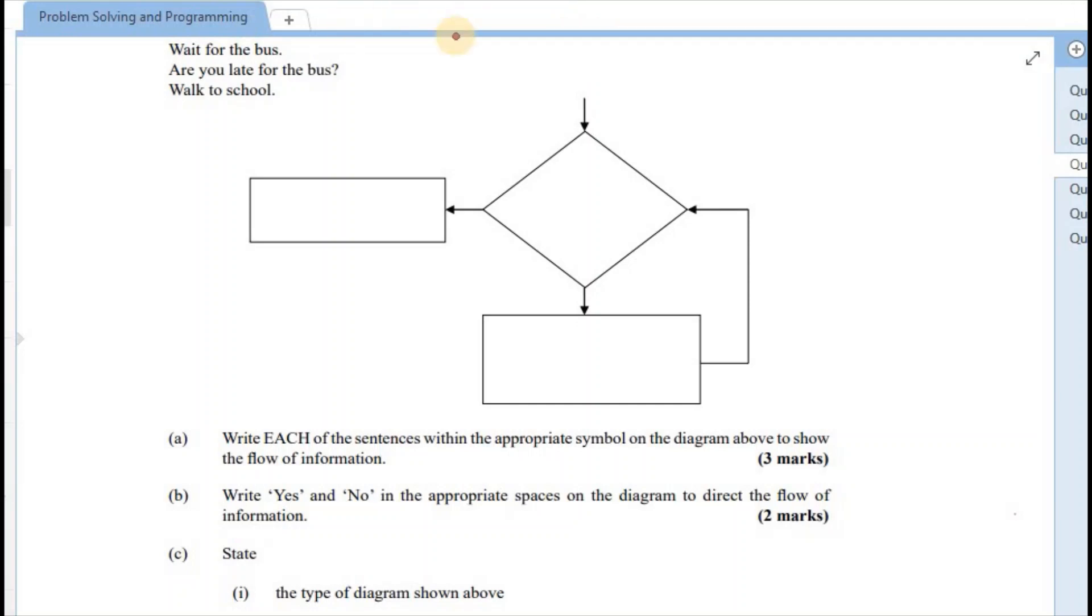So again, just to narrow it down, this would have been used in a while loop because the condition started off. And then from that, we were able to execute the code or to perform the actions. Alright, so let's fill in these three sentences within the appropriate symbol.